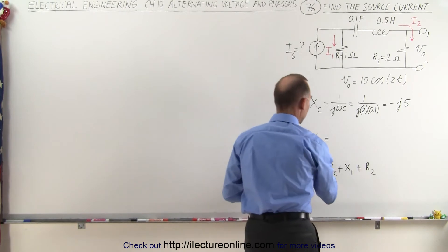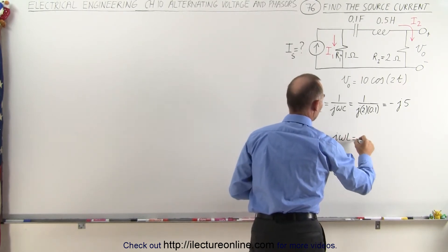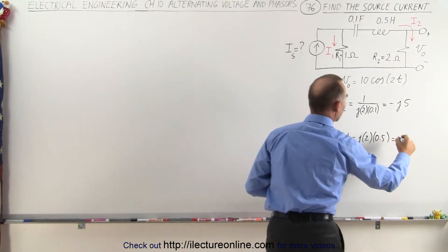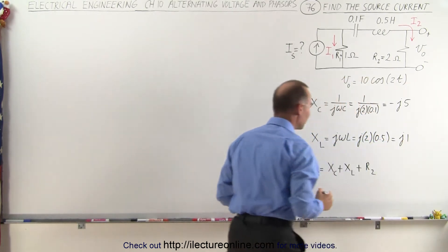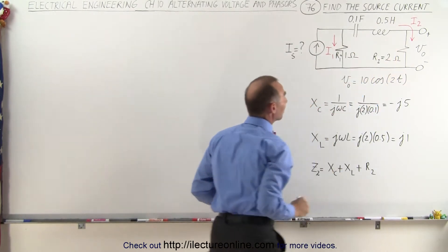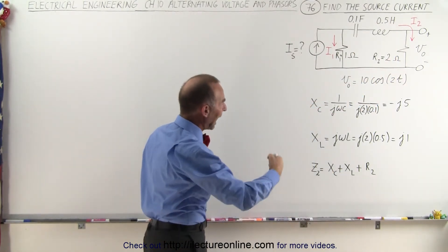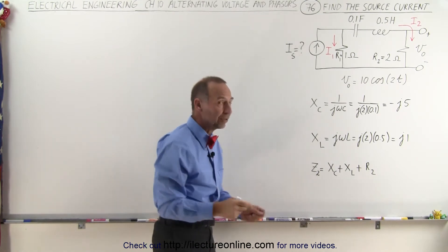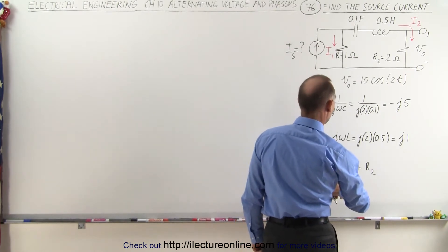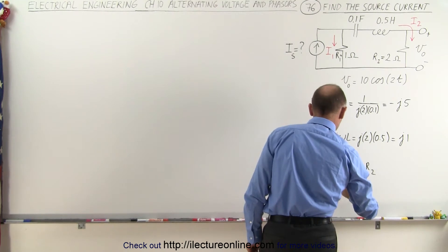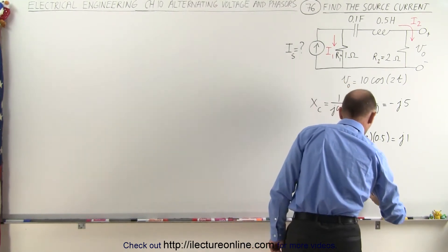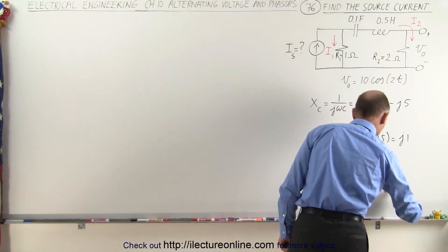For the inductance, we get jωL, which is equal to j times 2 times 0.5, which is simply j times 1. And finally, we want to find the impedance in this branch — we'll call it Z2. We simply add the reactances and resistances together, keeping in mind there's a phase difference. So Z2 equals Xc plus Xl plus R2: minus j5 plus j1 plus 2 ohms, which gives us 2 minus j4.